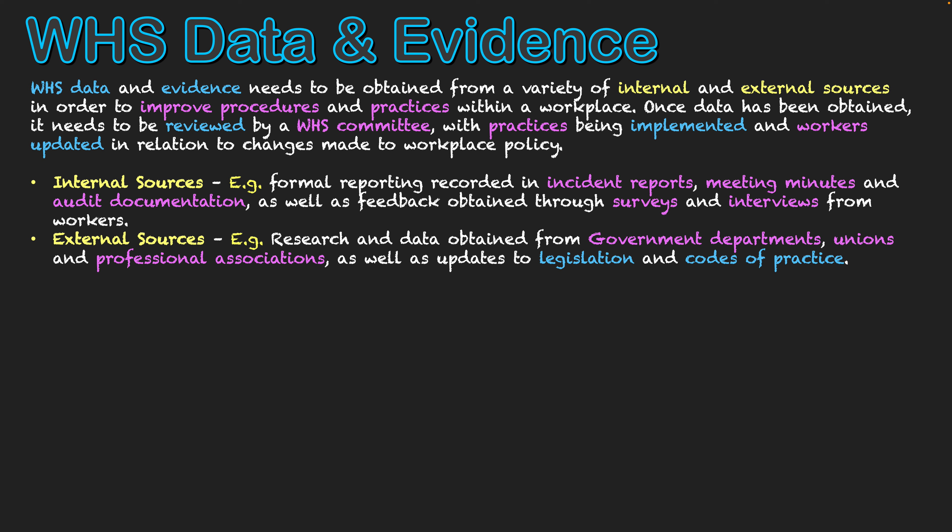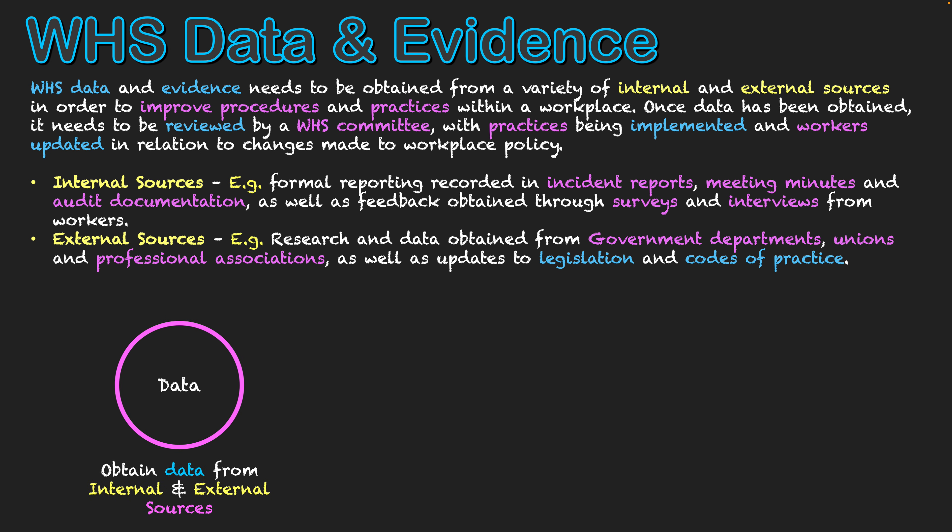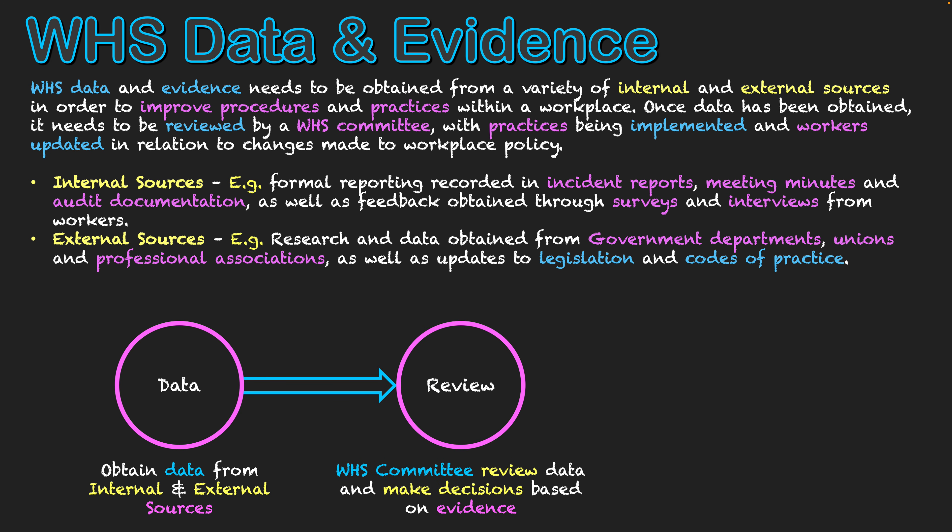So now we need to go through the process. What does this look like? Why do we need data and evidence? How do we use it effectively? Firstly, we need to get the data — obtained from the internal and external sources. Once we've gathered that data, we need to review it. The WHS committee might get together and review the data, making decisions based on the evidence they've gathered within that data.